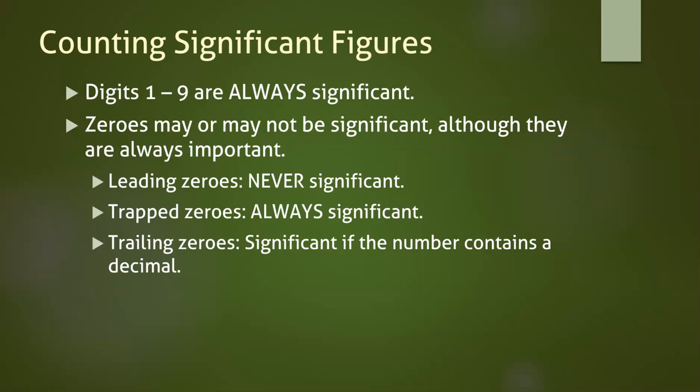Zeros, on the other hand, depend on their locations. I want to be very clear here. Significant is a very specific term, meaning that a digit was measured or estimated. Digits that are not significant are still important.